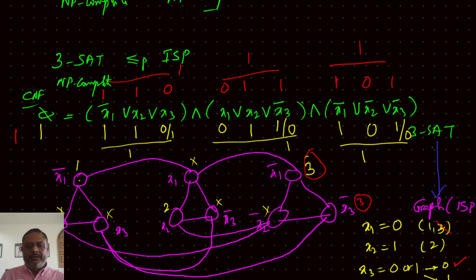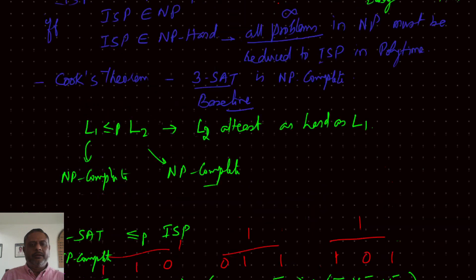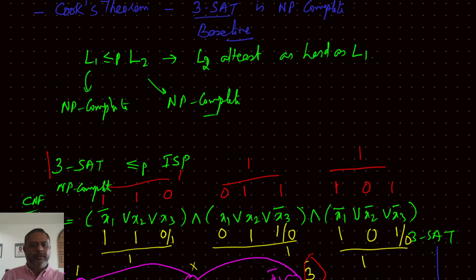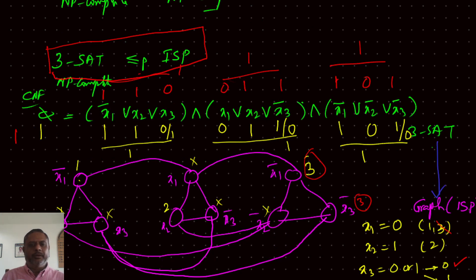If we can find n independent nodes in the independent set problem, those nodes correspond to values of the literals. Substituting those literal values back into the 3SAT problem gives a true solution. We converted the 3SAT problem into the independent set problem, and this conversion is done in polynomial time.